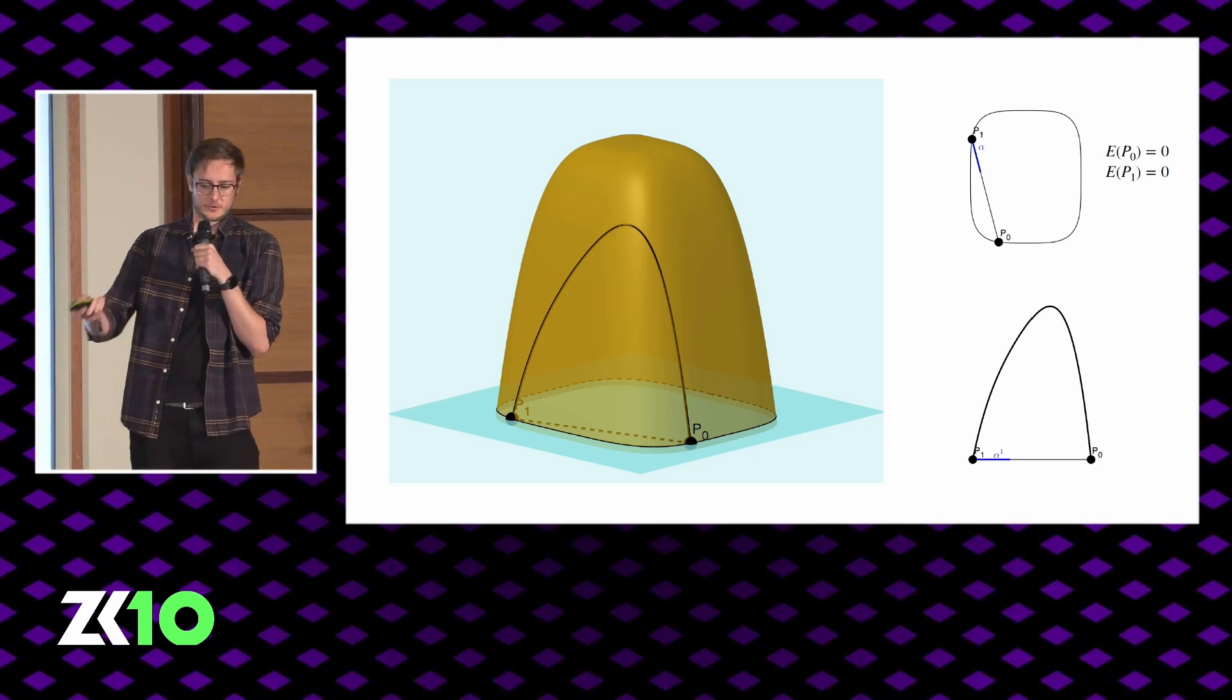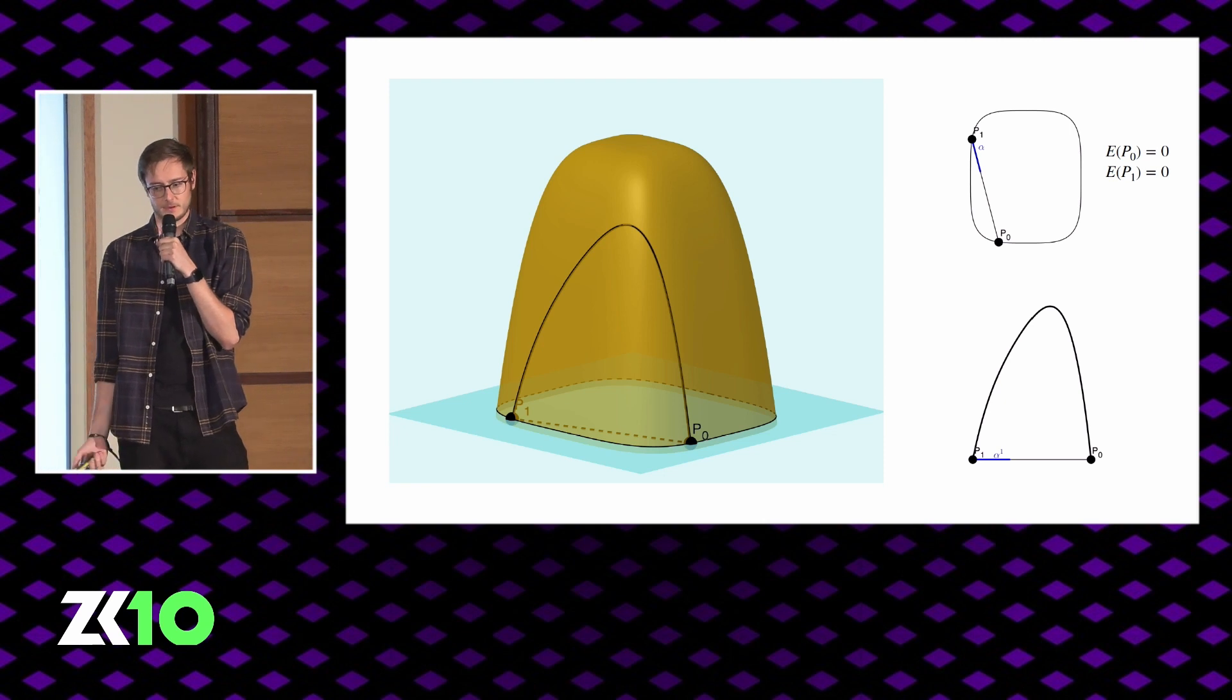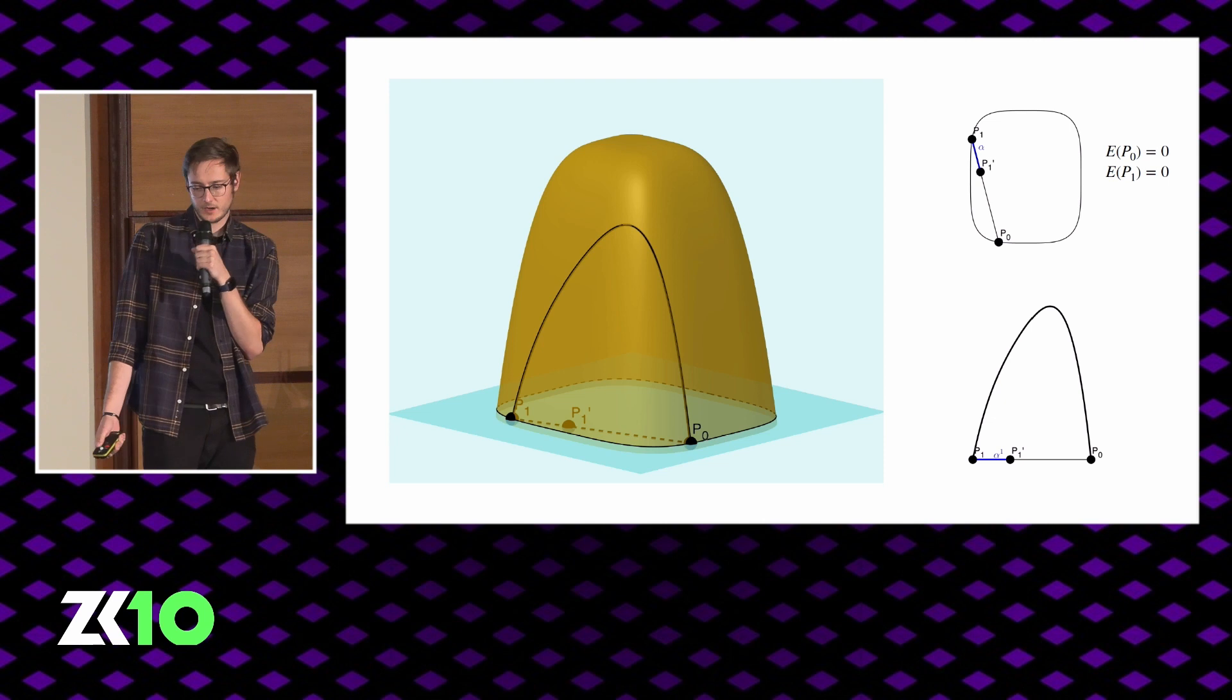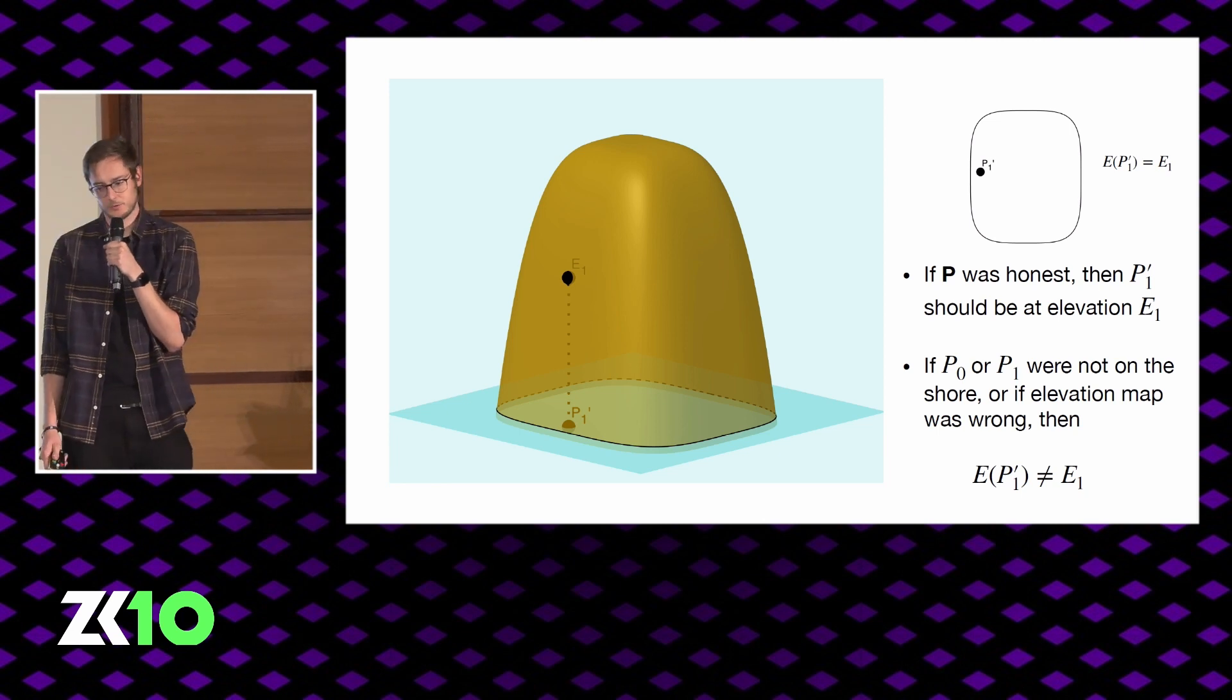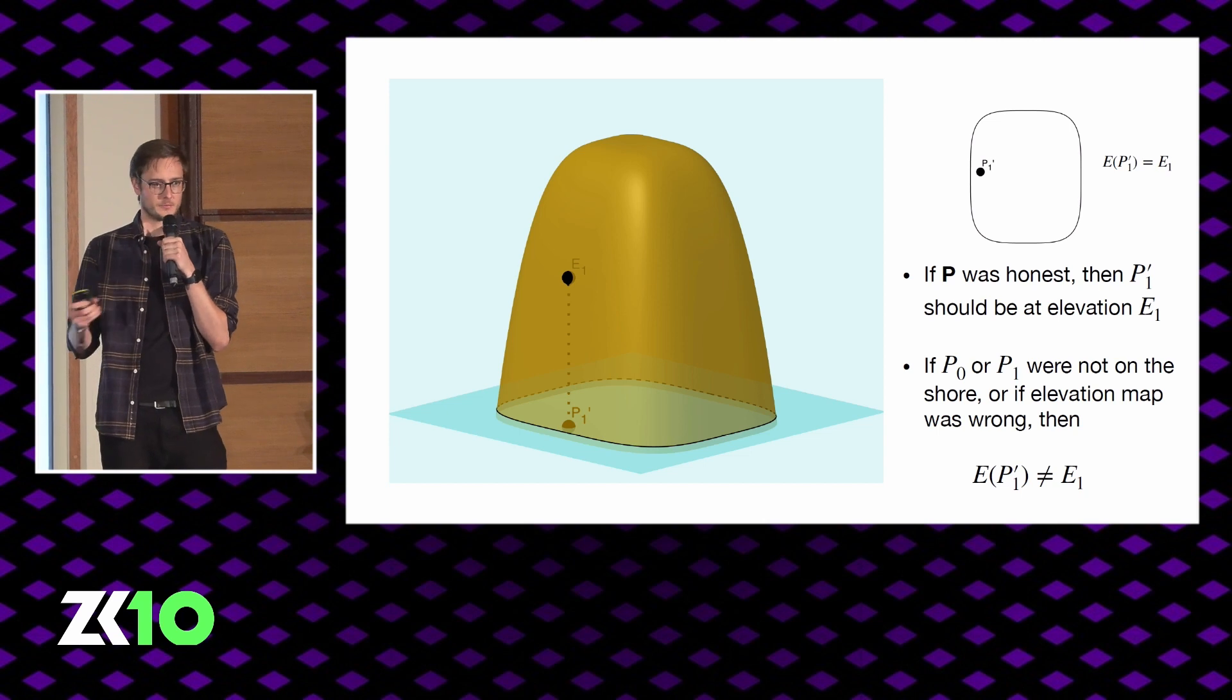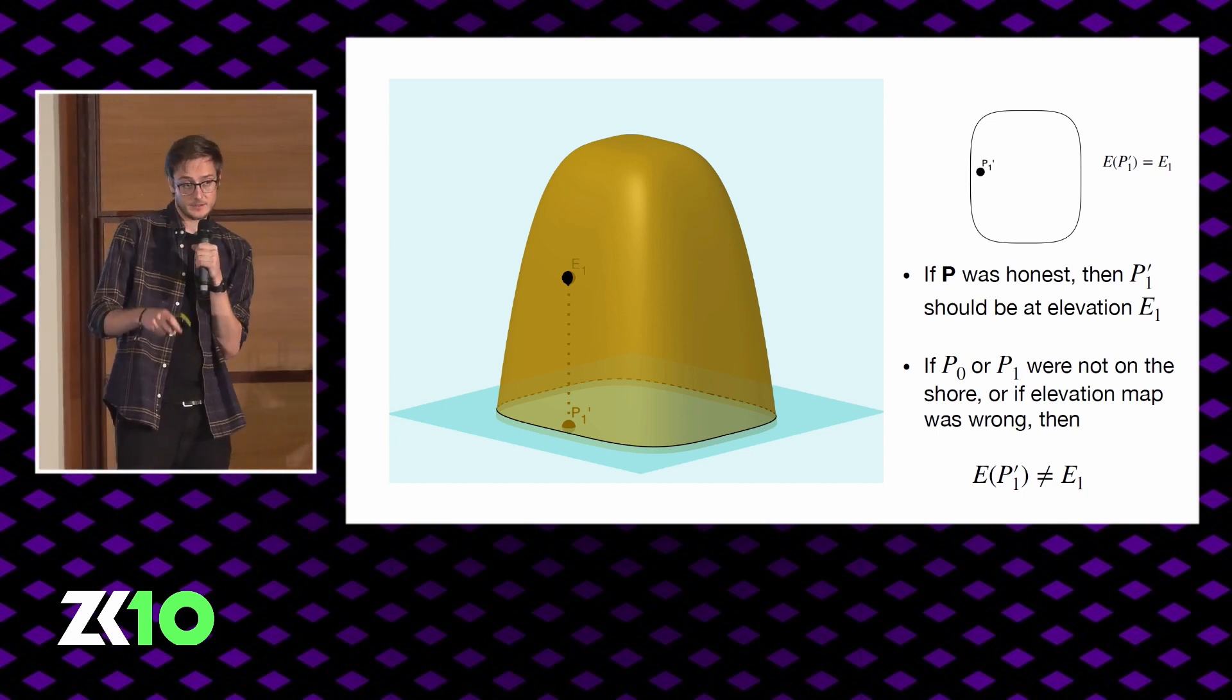Because the elevation map already contains the information about the elevation of P0 and P1, and we're just checking that the elevation map is correct, well he can actually forget about P0 and P1 and just focus on P1 prime. So he's walked from P1 to P0 with this elevation map. The verifier samples the random alpha. This defines a new random point P1 prime. We can forget about the previous points because what we really care about now is testing this elevation map. We've reduced our problem from checking two different landing coordinates to only checking the elevation of a single point on the island.